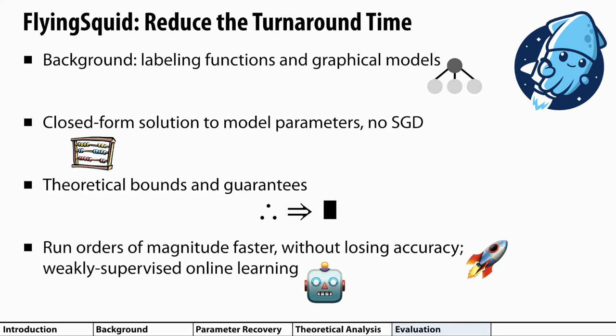Since it doesn't need to run SGD, FlyingSquid can run orders of magnitude faster than previous approaches, and surprisingly, we found that we often didn't need to sacrifice accuracy to get these benefits. We could often still build high-quality models. I'll talk about how this enables exciting new applications like weakly supervised online learning.